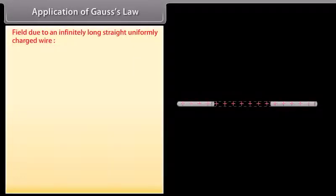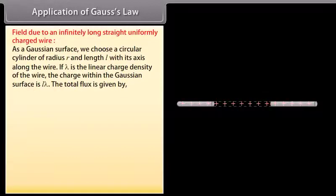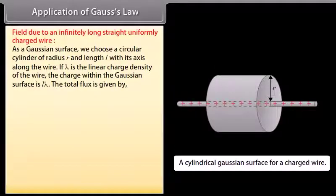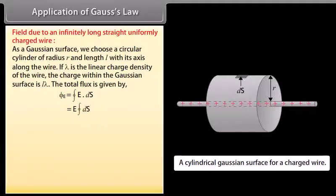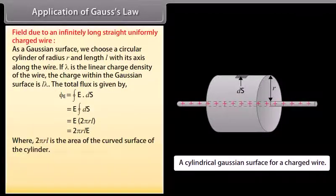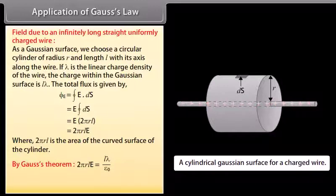Application of Gauss's law — Field due to an infinitely long straight uniformly charged wire: As a Gaussian surface, we choose a circular cylinder of radius r and length l with its axis along the wire. If λ is the linear charge density, the charge within the surface is lλ. From Gauss's theorem, φE = E × 2πrl, giving the electric field at radial distance r as E = λ / (2πrε₀).